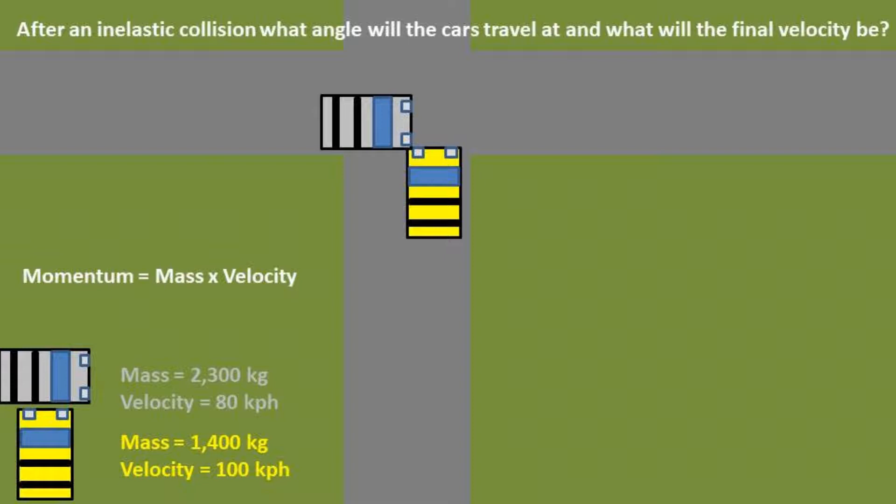Momentum is simply the mass times the velocity. So the first thing that we do is draw out the momentum vectors. We have the mass times velocity of the yellow car going north, and the mass times velocity of the gray car going east.